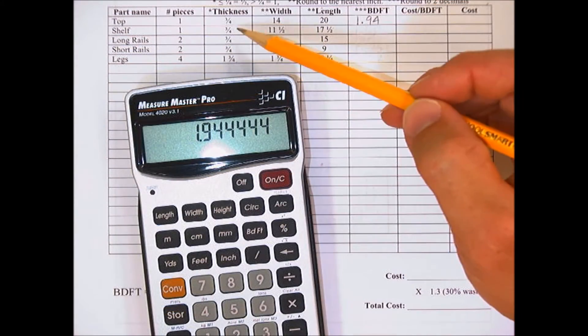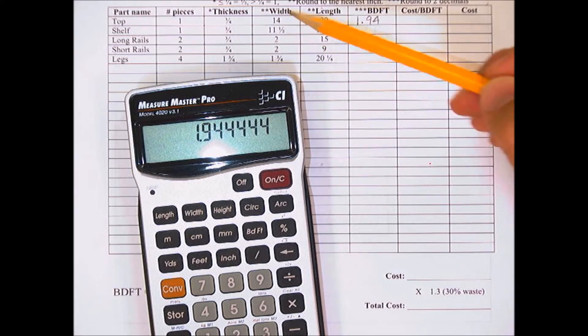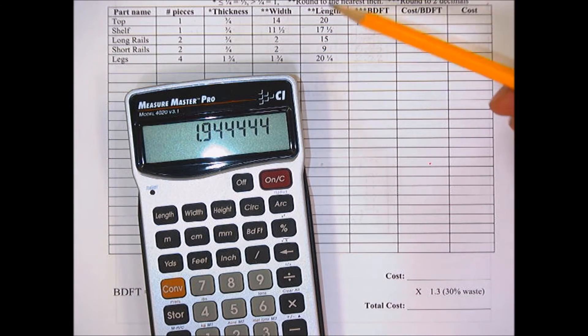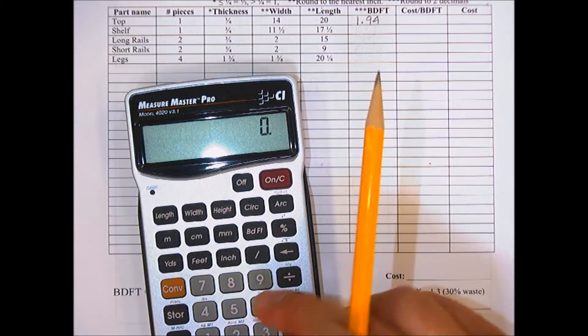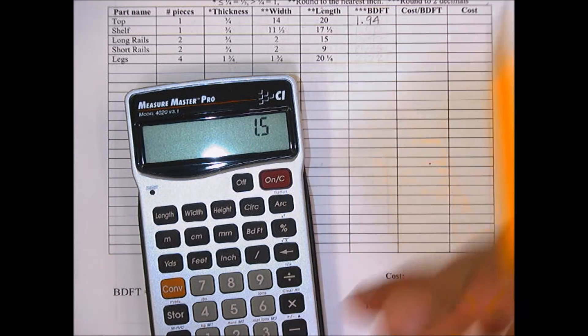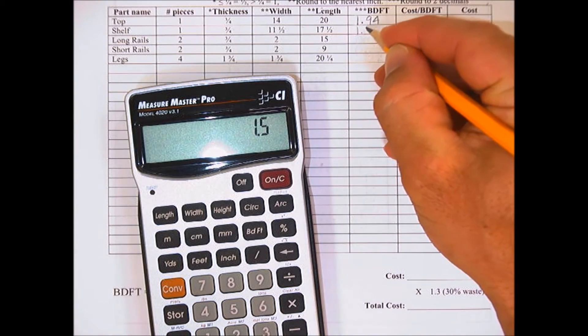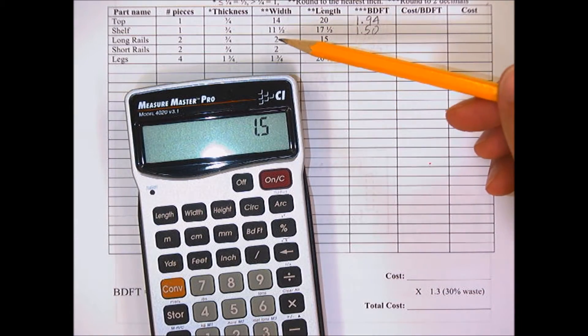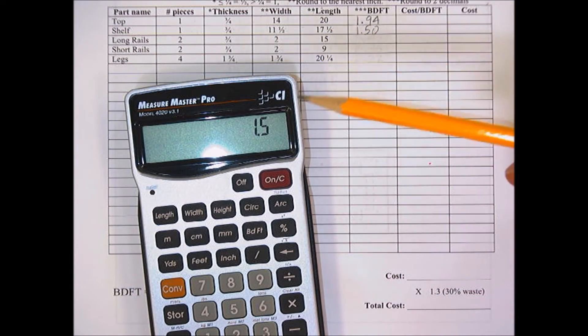Next, for the shelf: one inch rounds to one, half rounds up to 12, half rounds up to 18. So we can do 12 times 18 divided by 144, which equals 1.5. For the long rails, there's two of them. Thickness will be one, two inches wide by 15.